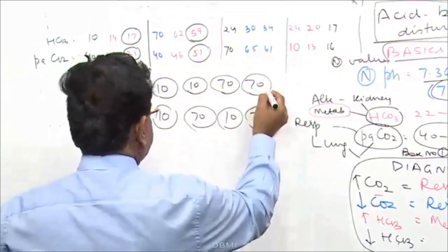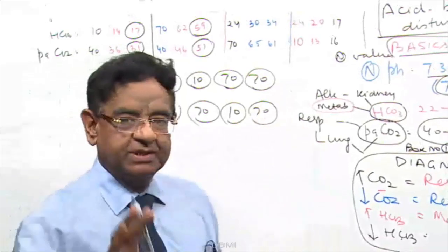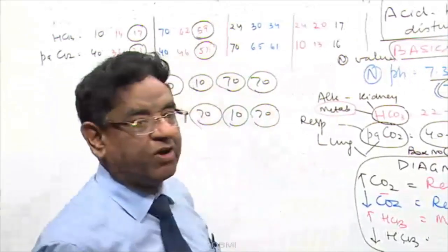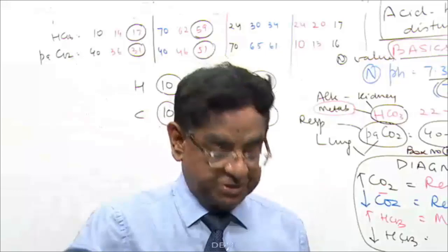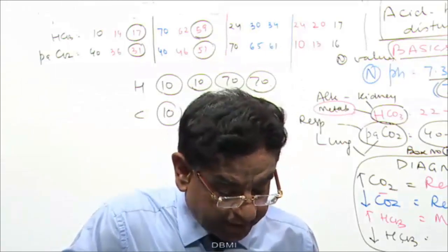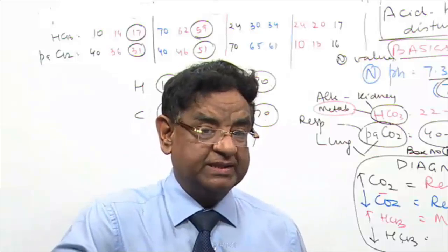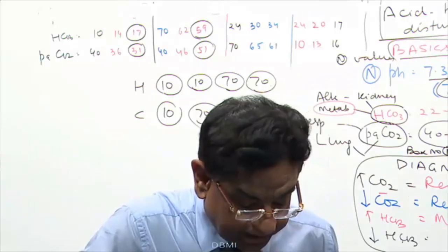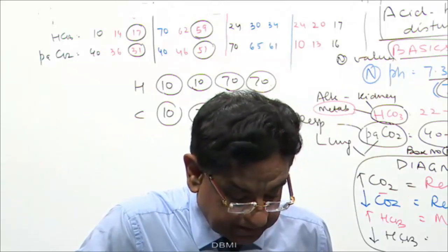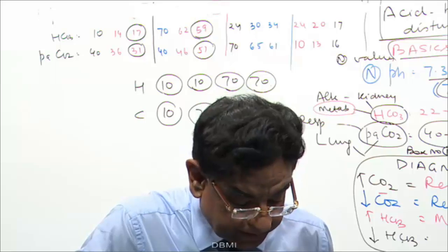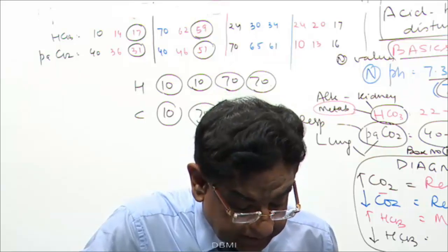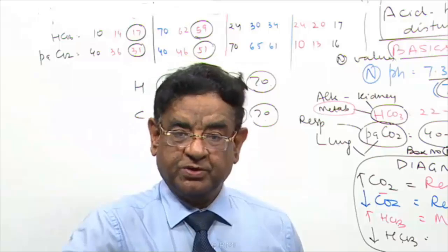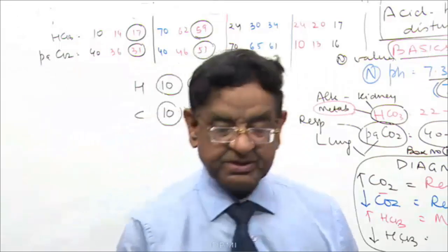These are all basics. Now let us do question number 3: interpret the following data. Bicarb is low — that is metabolic acidosis. CO2 is 20 — respiratory alkalosis. So the best answer is C — metabolic acidosis and respiratory alkalosis.